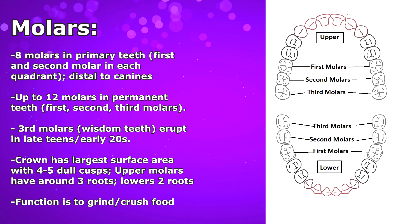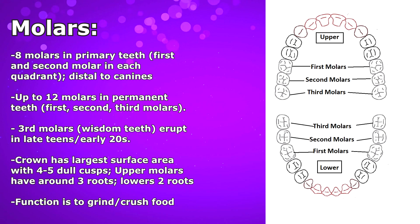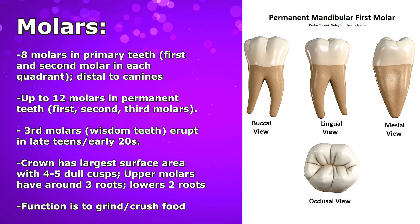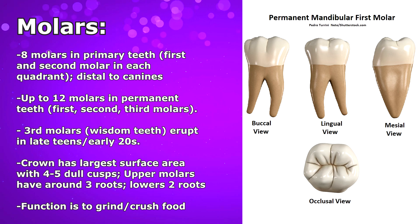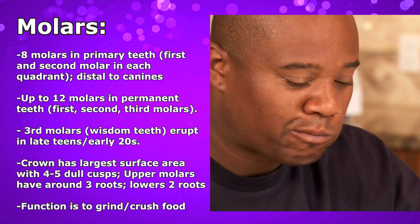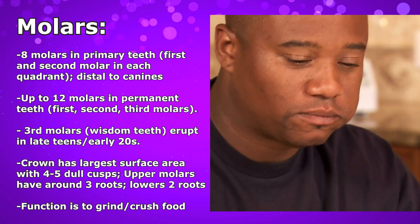For example, in my case, I never developed my maxillary third molars — they just never came in, and my mandibular third molars were impacted and had to be surgically removed. So all my wisdom teeth are gone; I only have dumb teeth left. Now there's going to be a much larger surface area on the crown of a molar compared to the other teeth, and the molars are usually going to have four to five dull cusps. The maxillary molars tend to have three roots, whereas the mandibular molars tend to have only two roots. And the main function of the molars is to crush and grind food.